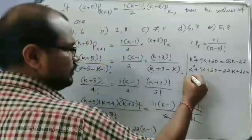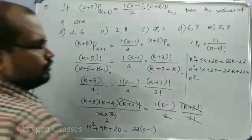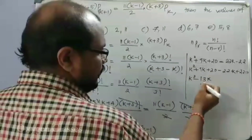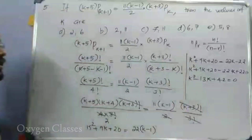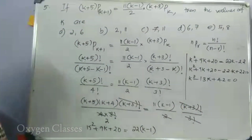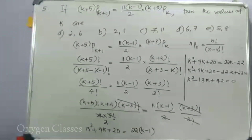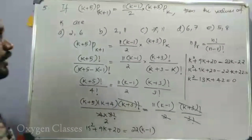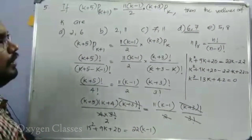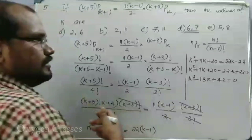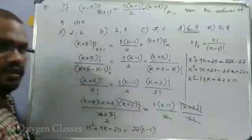Rearranging: k squared plus 9k plus 20 minus 22k plus 22 equals 0, giving k squared minus 13k minus 42 equals 0. Factorizing using sum 13 and product 42, the factors are 6 and 7.